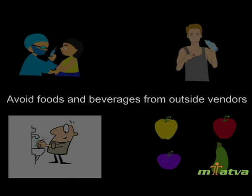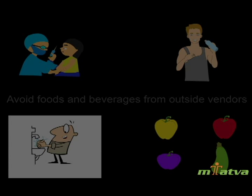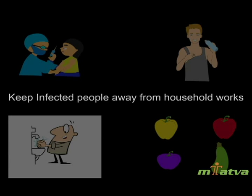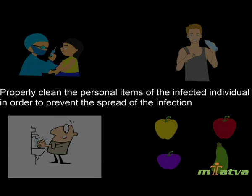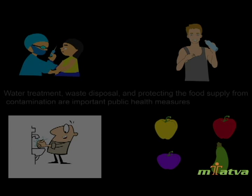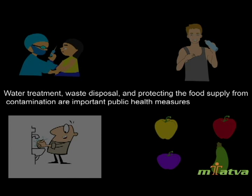Avoid raw foods and eat foods that have been thoroughly cooked and are still hot and steaming. Avoid foods and beverages from outside vendors, keep infected people away from household work, and properly clean the personal items of the infected individual to prevent the spread of infection. Water treatment, waste disposal, and protecting the food supply from contamination are important public health measures.